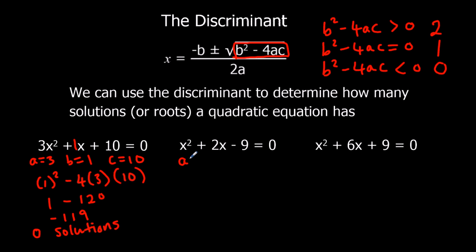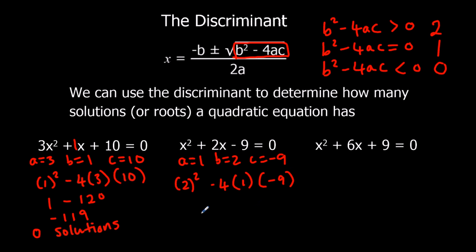For the second equation, a is 1, b is 2, and c is negative 9. So b squared minus 4ac: 2 squared is 4, minus 4 times 1 times negative 9. Negative 4 times negative 9 is positive 36. 4 and 36 make 40 — it's positive, bigger than zero, so this will have two solutions or two real roots.